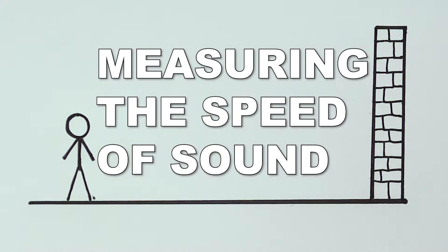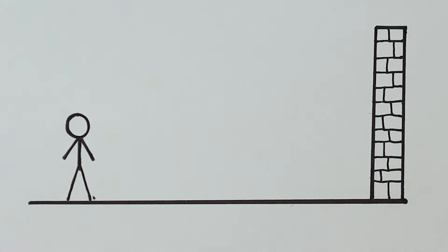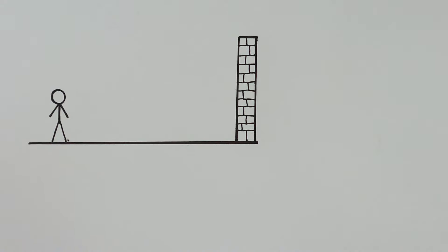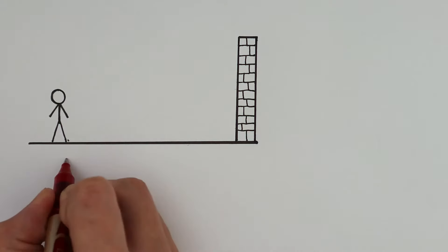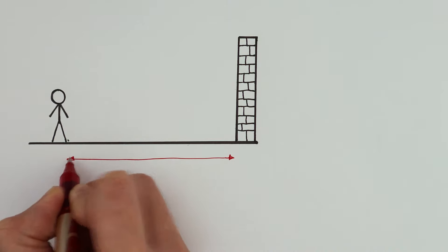How do we measure the speed of sound using some wooden blocks and a wall? We take a measuring wheel to measure the distance between this man and the wall. Let's say that's 100 meters.